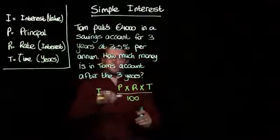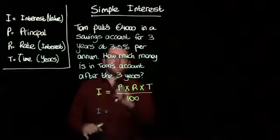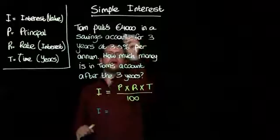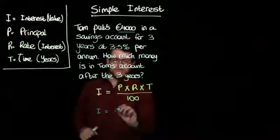So the interest, that's what we're looking for. I is equal to the principal. Well, we need to highlight where that is. That's the €4,000. That's where that's coming from.